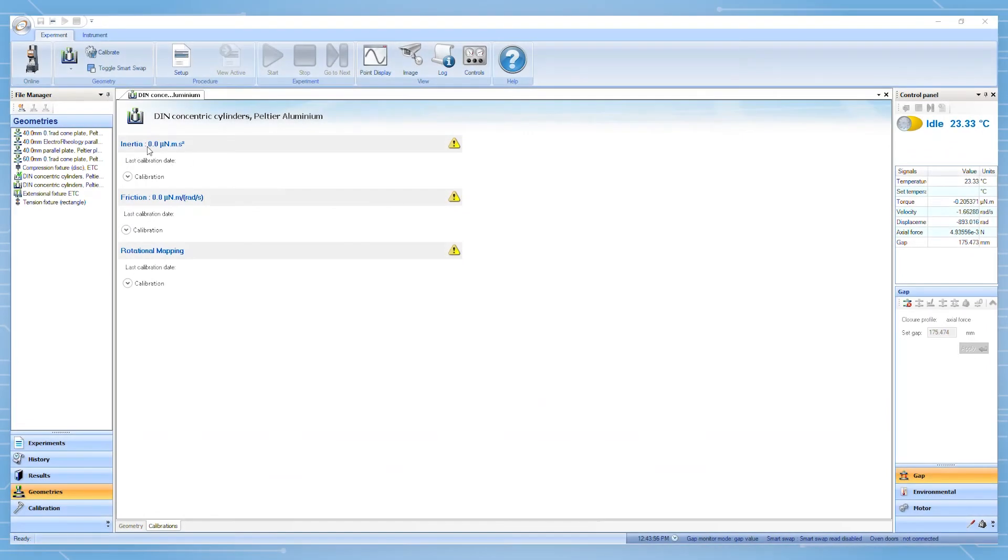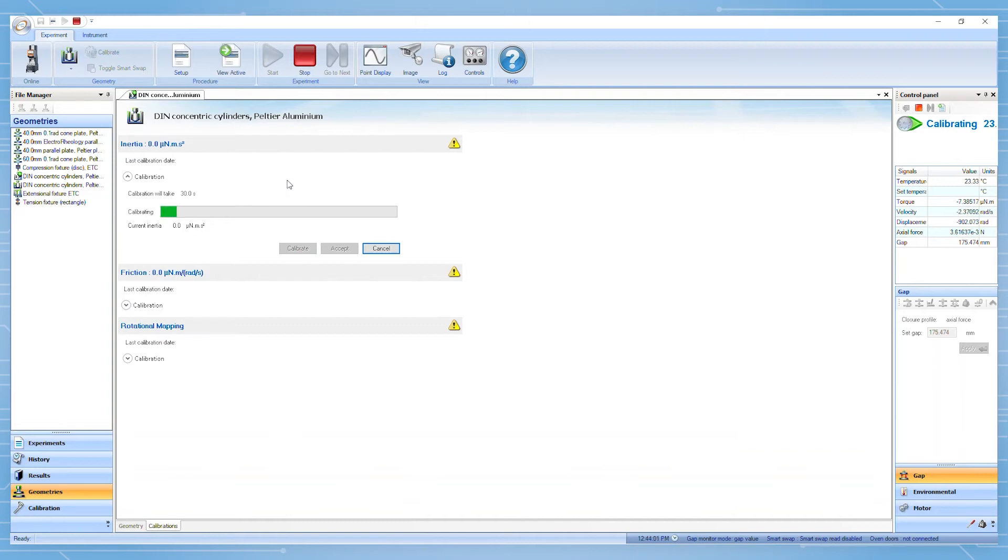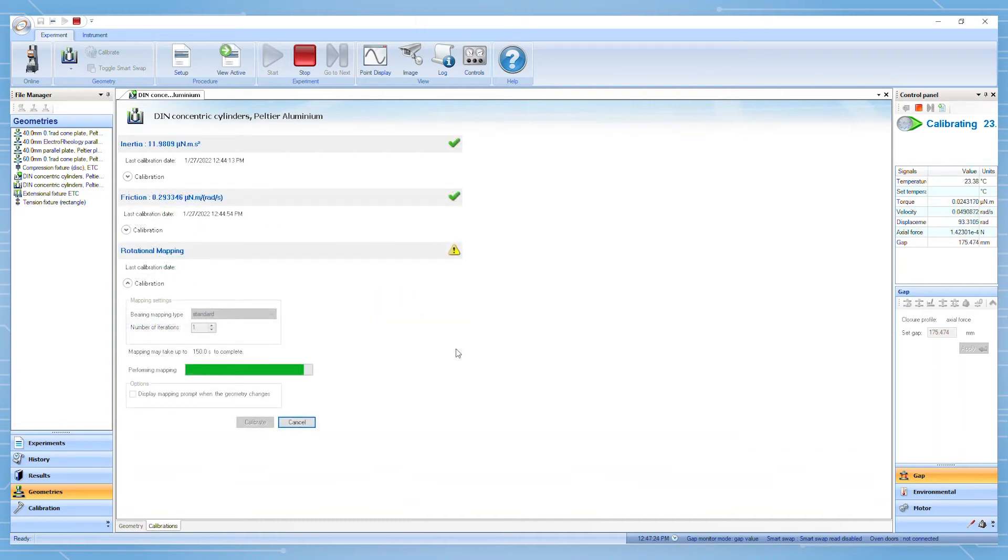Afterward, TRIOS will bring you to geometry calibration. The calibrations will include inertia, friction, and rotational mappings, all of which can be completed quickly with the on-screen prompts.